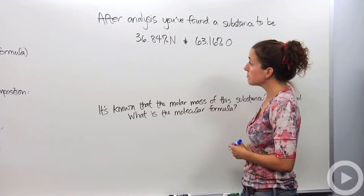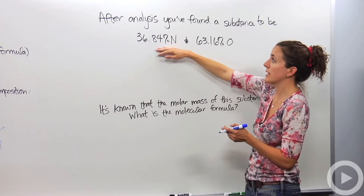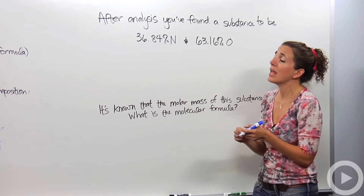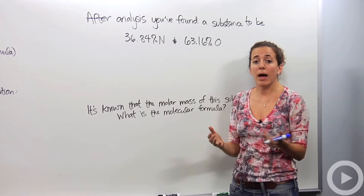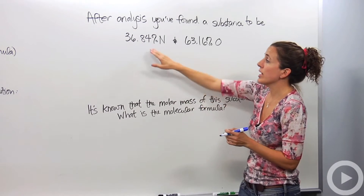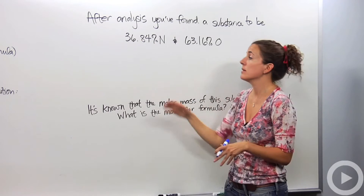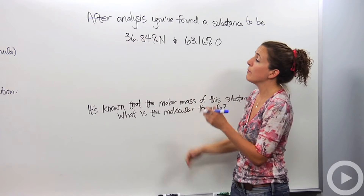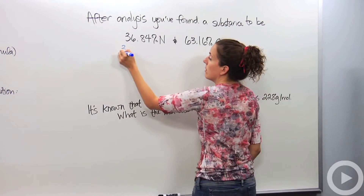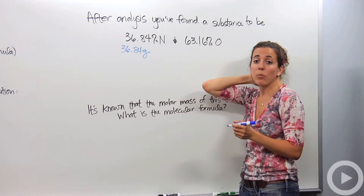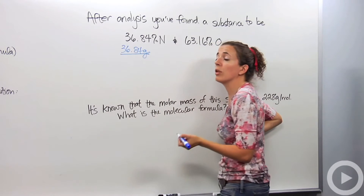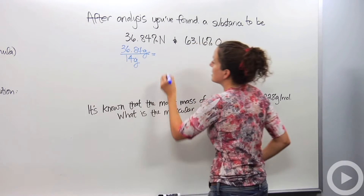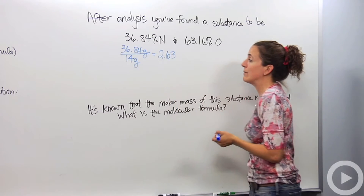Instead of finding percent composition, let's say we're given percent composition. We analyzed a substance we didn't know, and found it to be 36.84% nitrogen and 63.16% oxygen. What do we do with this information? We have to figure out the compound. I'm going to assume I have 100 grams of this substance, so I can change the percentages to grams — 36.84% nitrogen becomes 36.84 grams of nitrogen. Then I divide by the molar mass of nitrogen, which is approximately 14 grams, and I get 2.63 moles of nitrogen.